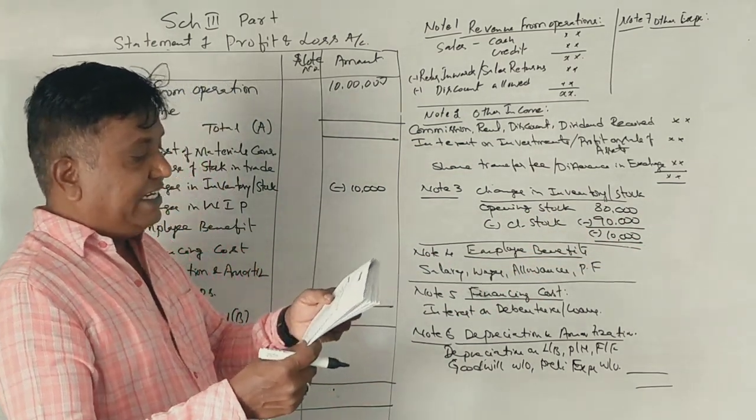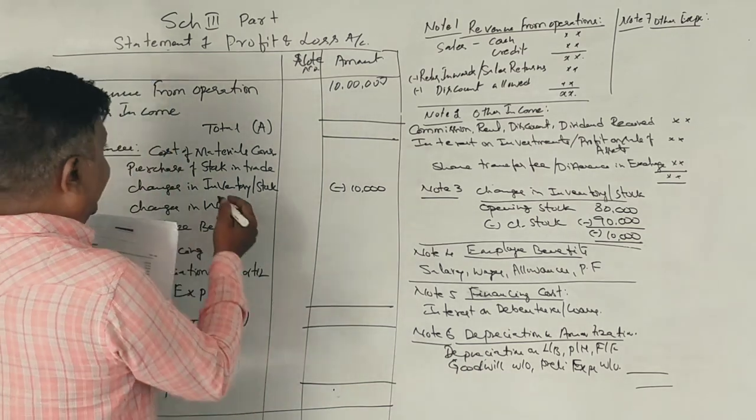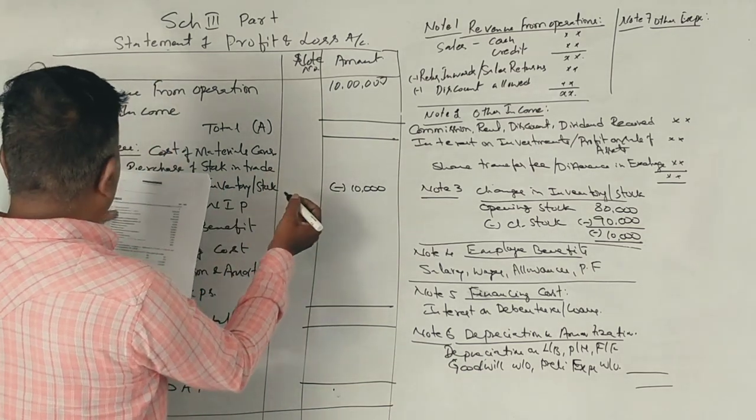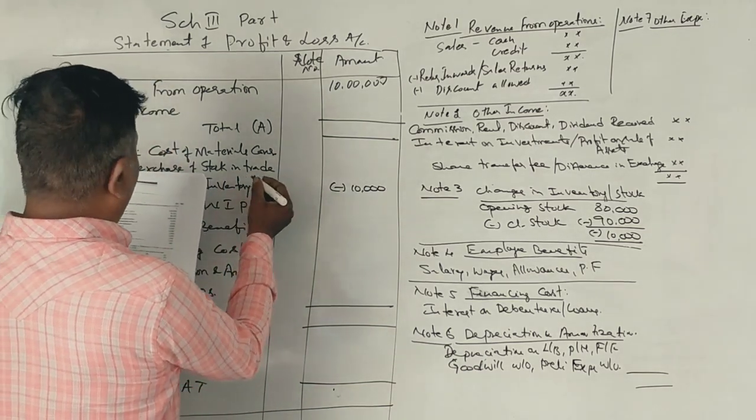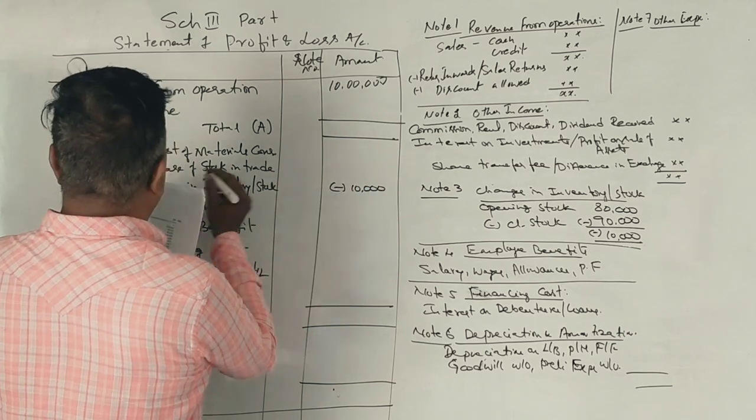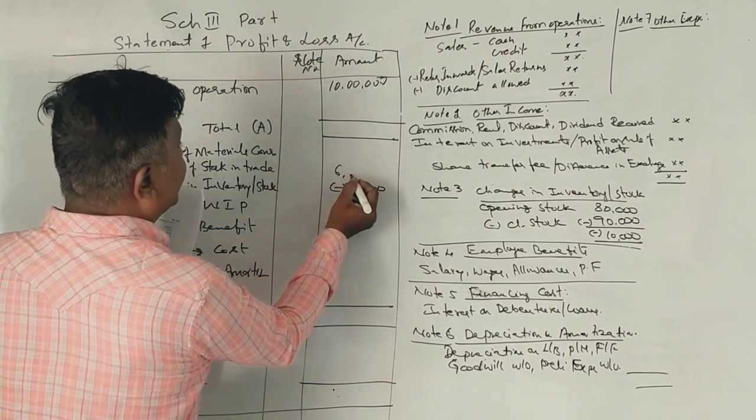Goods purchased, 50,000. Goods purchased, 6,00,000. Goods acquired, 6,00,000.